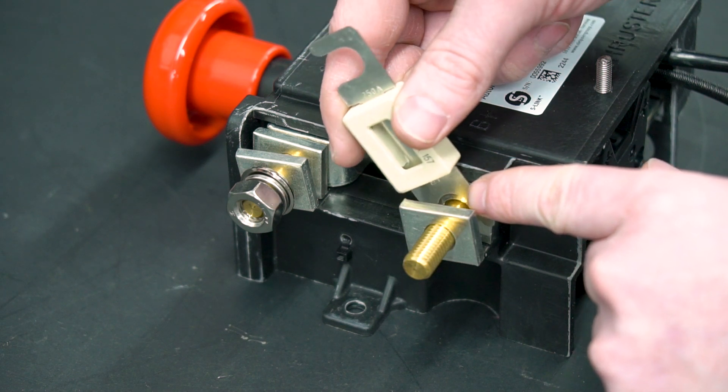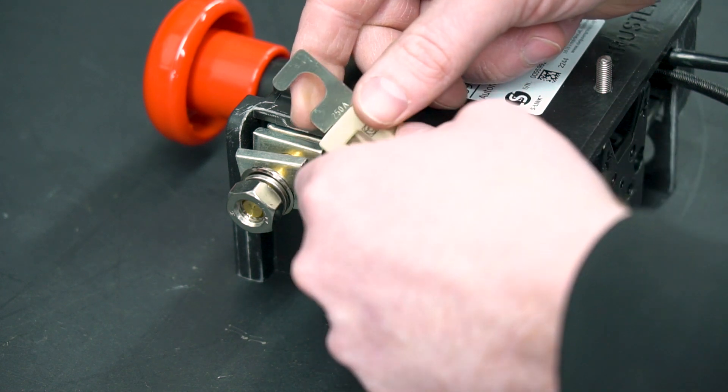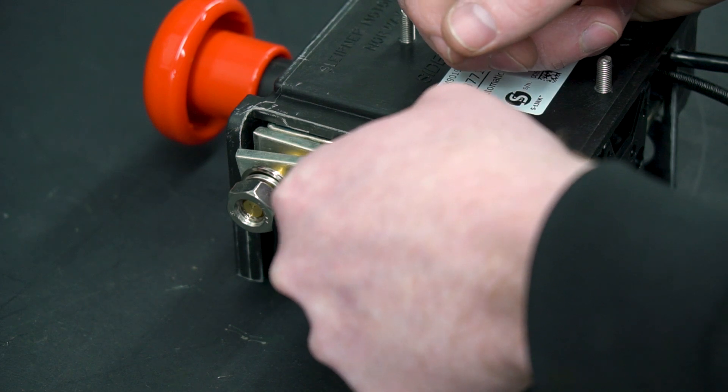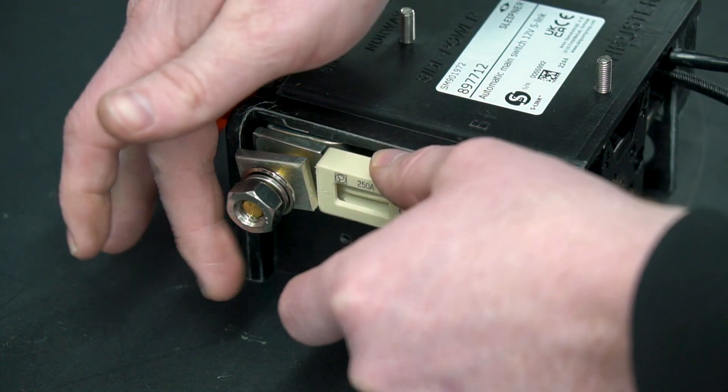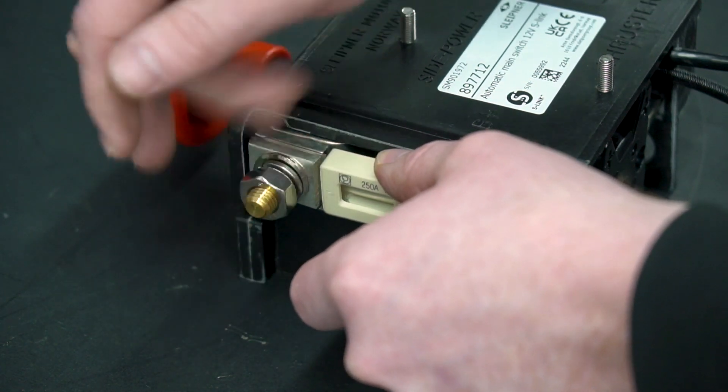Insert the lower end of the fuse around the lower terminal and slide the upper end of the fuse around the upper terminal. Then tighten the nuts.